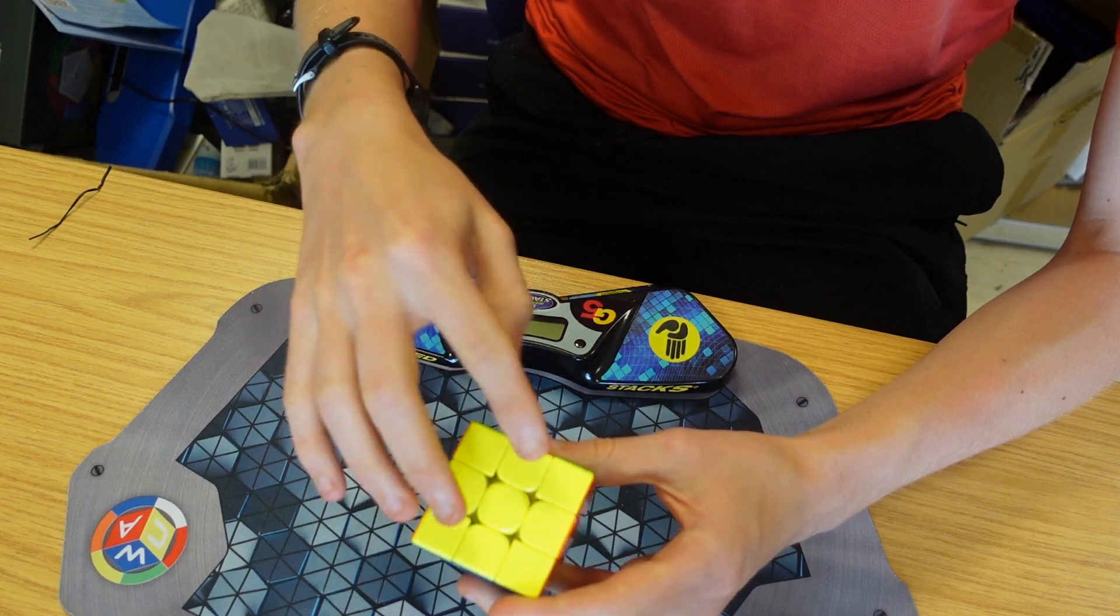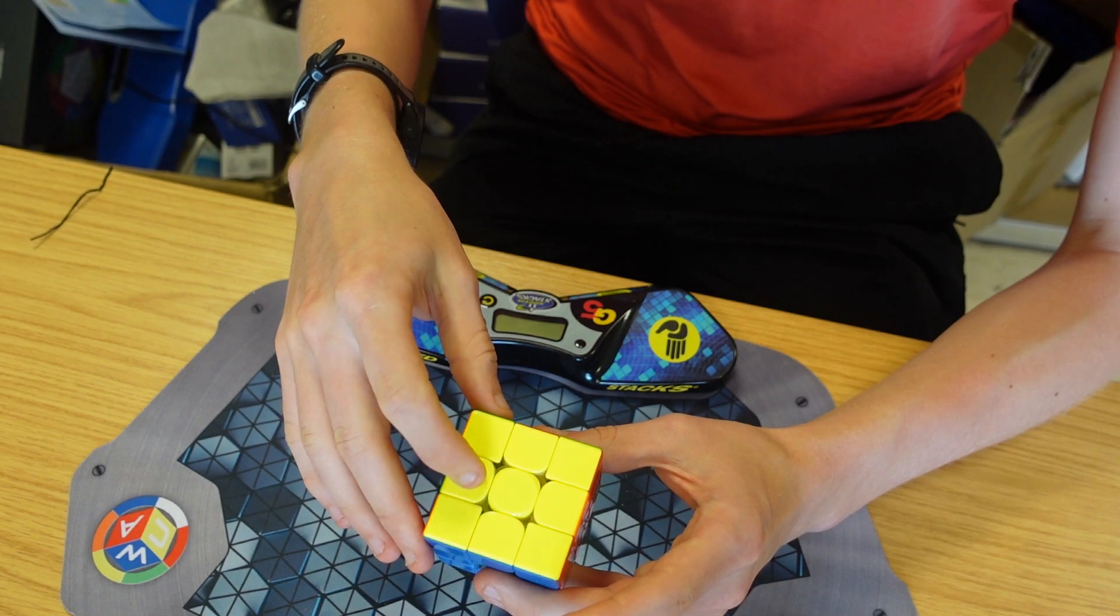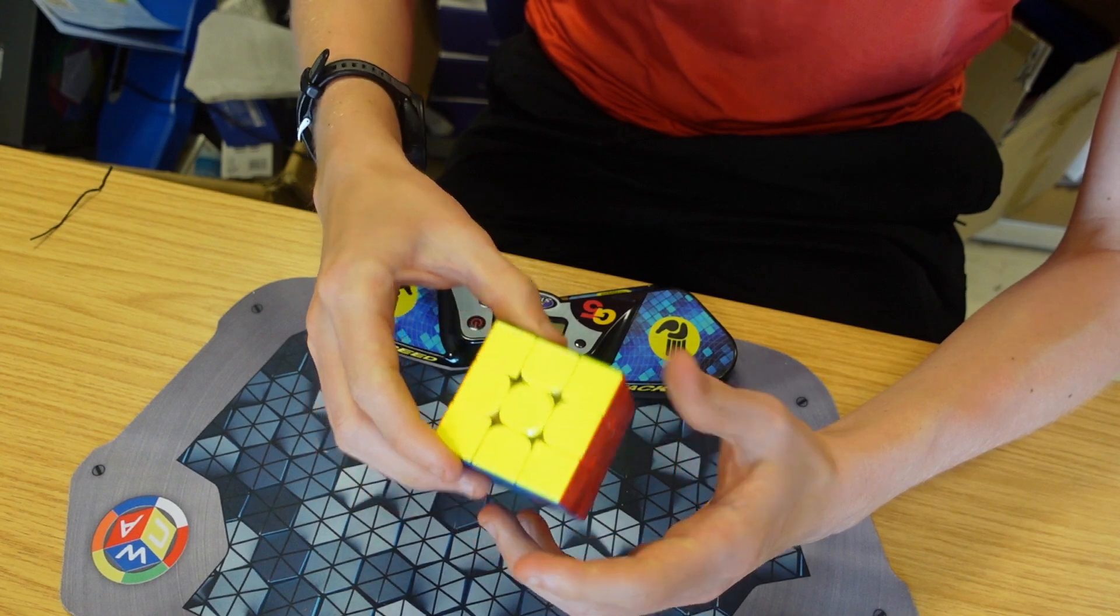Then we are going to do one algorithm out of four different options which will solve it from there. And now the cube is solved, but that's still rather slow.